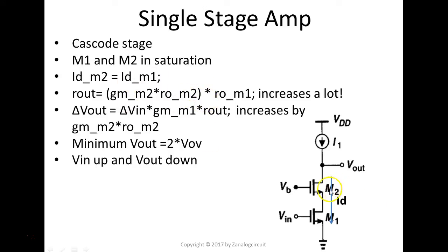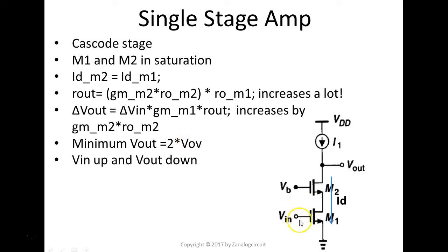In order to keep M2 and M1 in the saturation region, the minimum Vout is going to be at least two overdrive voltages. And the signal polarity: when the input goes up, the output goes down. So that's the cascode stage.